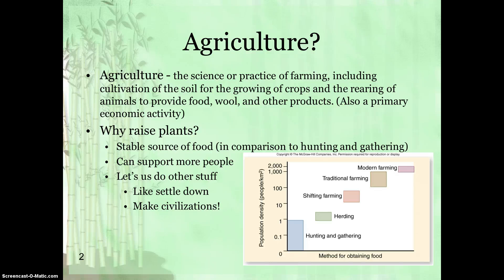Agriculture is basically the science or practice of farming and the cultivation of plants and animals and using them to benefit us as humans. You may be thinking, why should we raise plants? Why don't we just go back to the olden days and start hunting animals and gathering? Well, plants provide us a stable source of food. In comparison to hunting and gathering, they're actually quite stable — at least you'll know you'll have 10 bushels of corn grown, even in the worst case scenario.